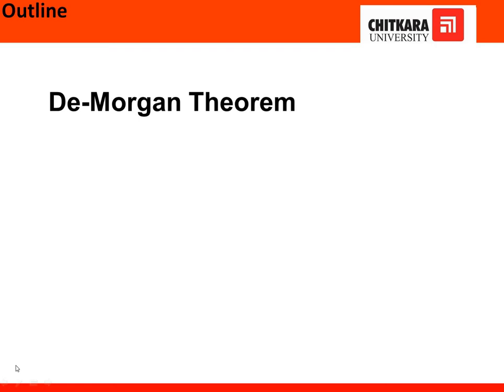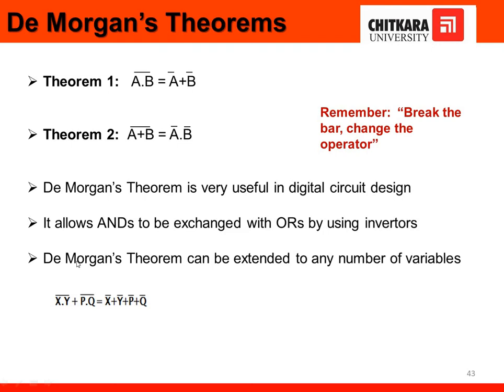Hello everyone. In today's class we will discuss the De Morgan theorem. De Morgan theorem is very useful whenever we design digital circuits. In digital electronics, we mainly focus on the miniaturization of the circuit, and it is possible when we split things, minimize them, and find the optimum out of redundant ones. This is mainly possible with the help of De Morgan's theorem, which allows ANDs to be exchanged with ORs by using an inverter — if we put an inverter on the AND, it can be converted into the OR. In the next slide, we will discuss how that happens.